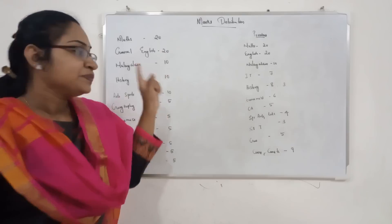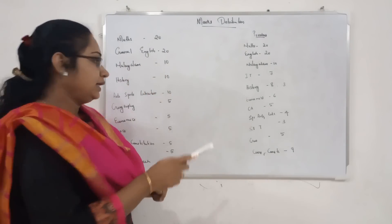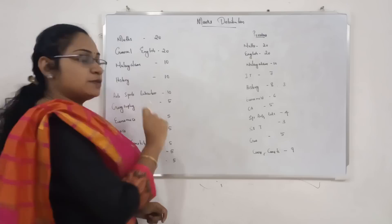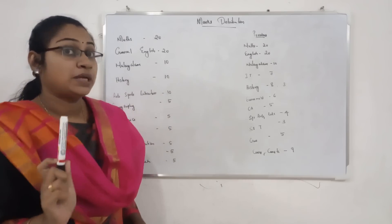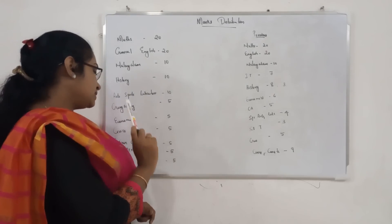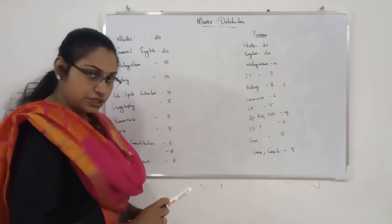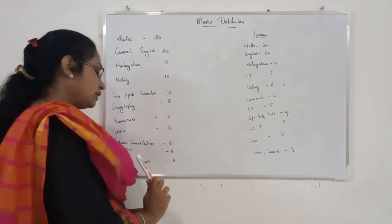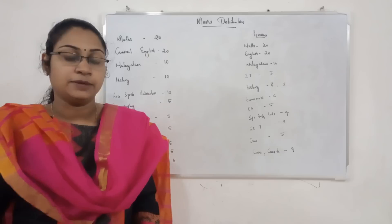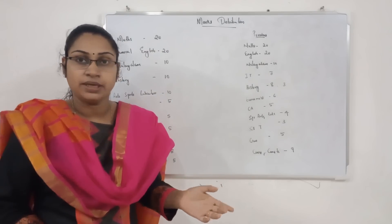Max: 20. English: 20. Malayalam: 10. History: 10. Arts, Sports, Literature: 10. Geography, Economics, Civics, Indian Constitution. Computer, Science and Technology. This is what we know about the Market Distribution.